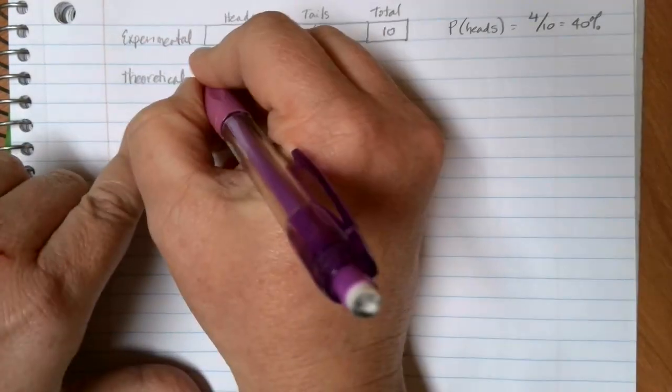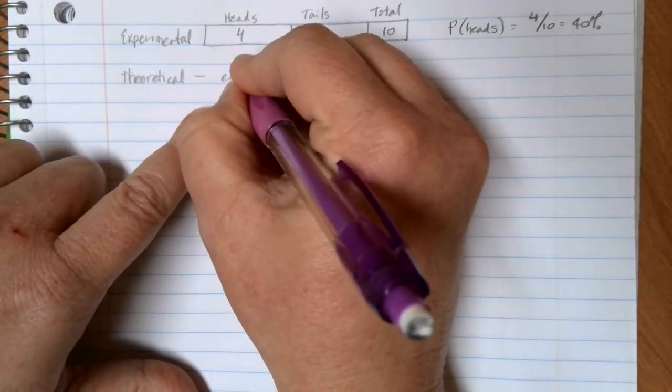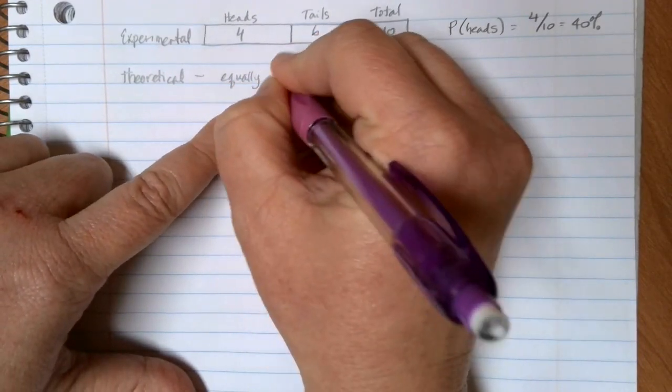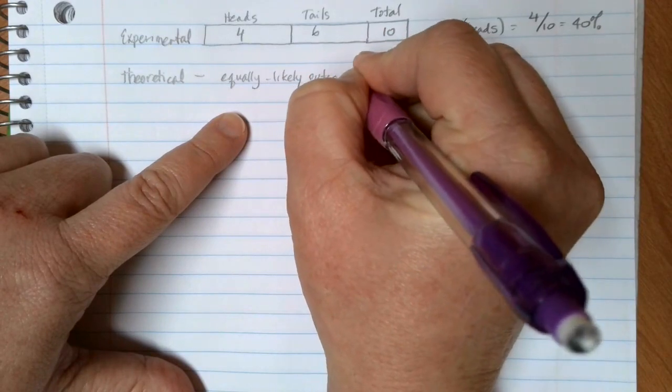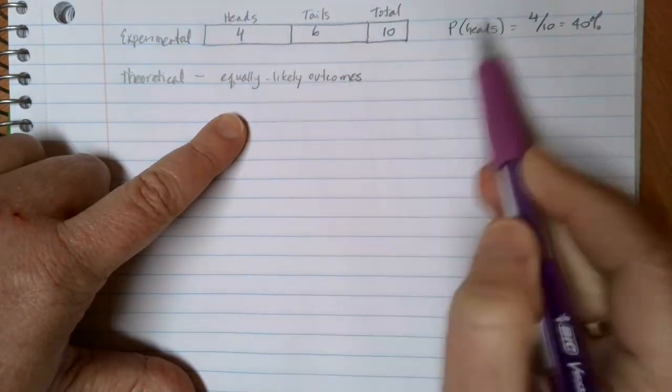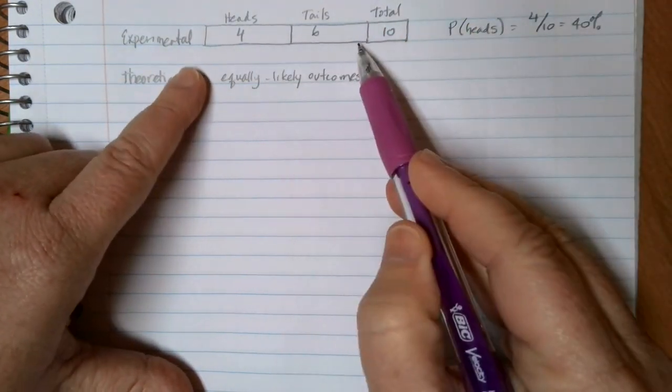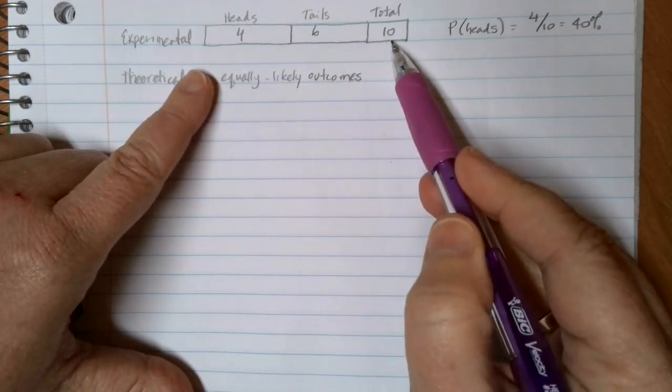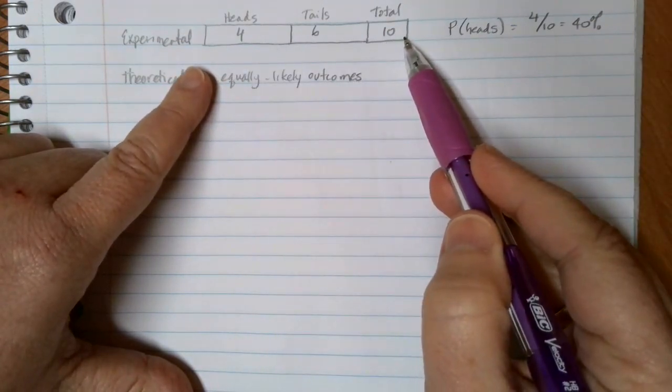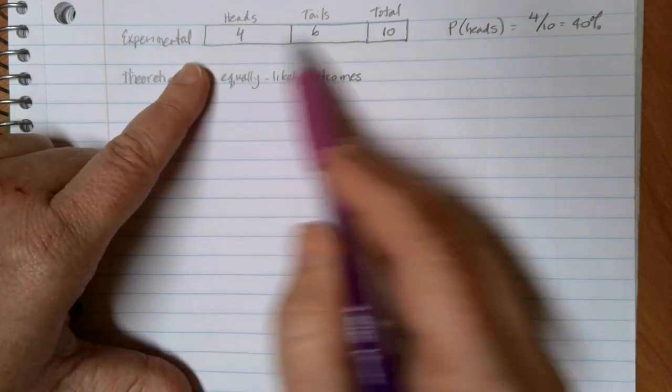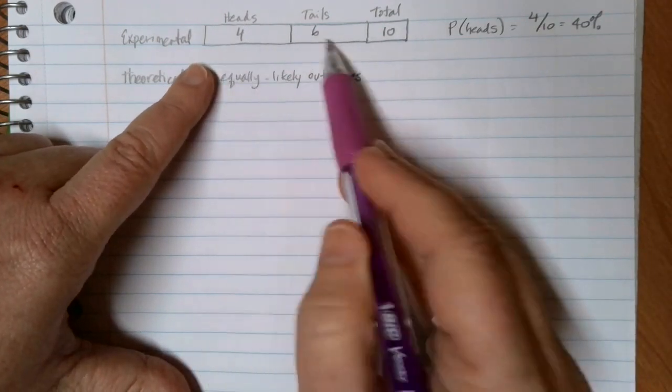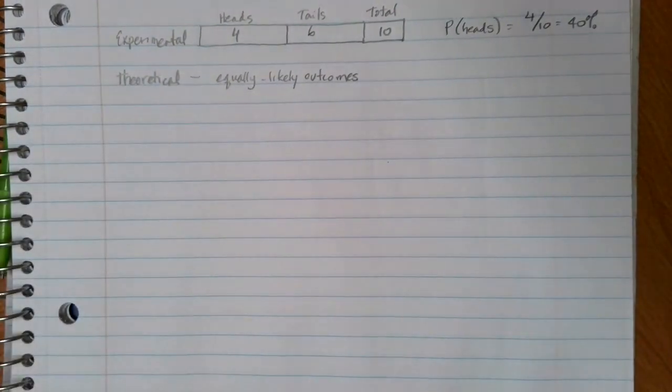But sometimes there are situations where we have equally likely outcomes that might happen. And situations might end up like this. If I were to flip a coin ten times again, I might get five and five. I might get six and four. I might even get ten and zero. Not very likely, but entirely possible.